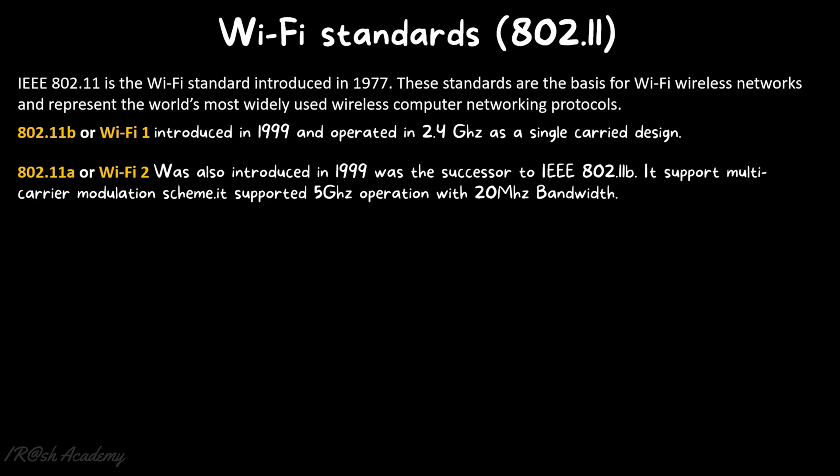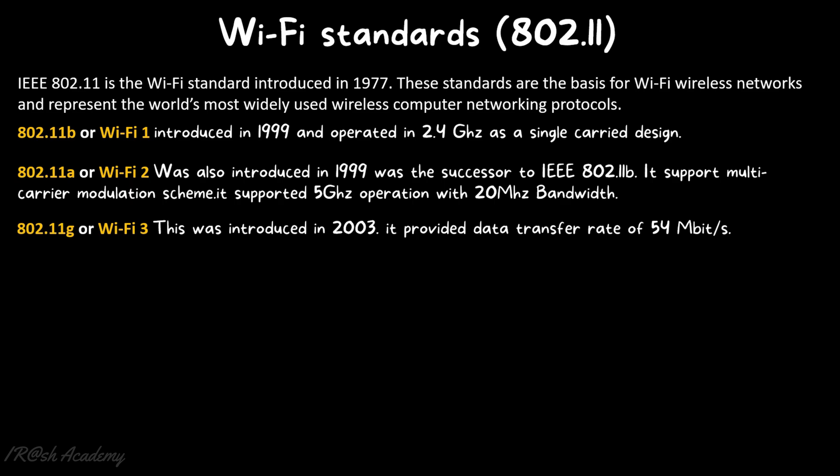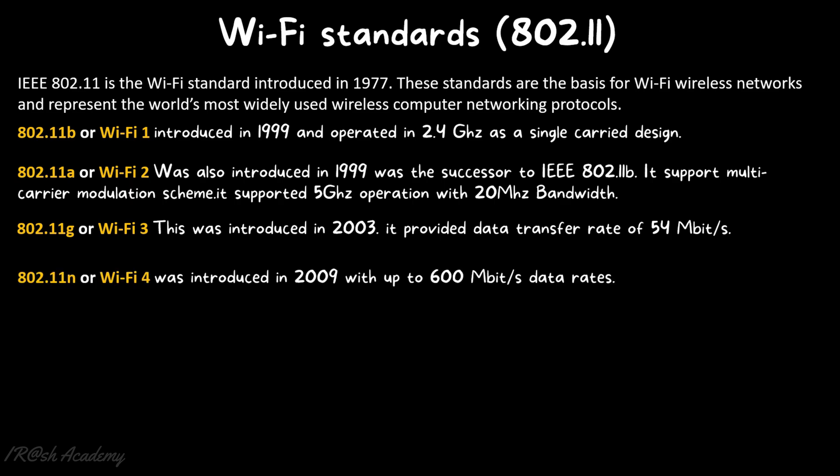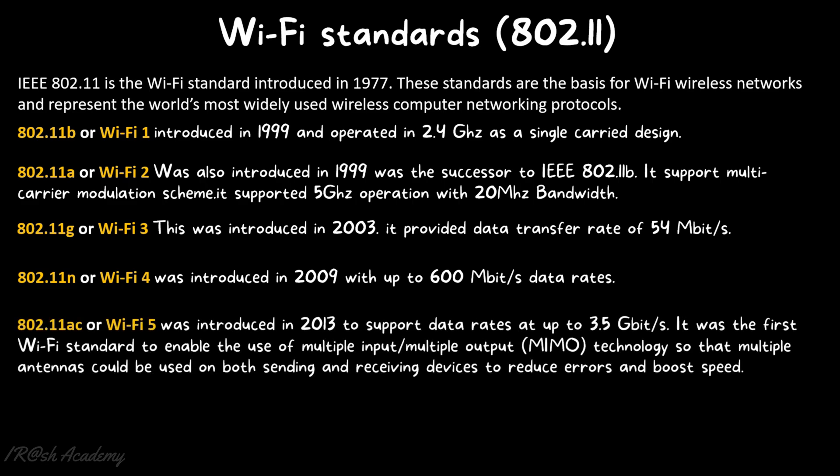802.11a supported a multi-carrier modulation scheme. Then 802.11g or Wi-Fi 3, introduced in 2003, provided a data transfer rate of 54 Mbps. Then 802.11n or Wi-Fi 4, introduced in 2009, offered data rates up to 600 Mbps. Then 802.11ac or Wi-Fi 5, introduced in 2013, supported data rates up to 3.5 Gbps and was the first Wi-Fi standard to enable MIMO technology, allowing multiple antennas on both sending and receiving devices to reduce errors and boost speed.